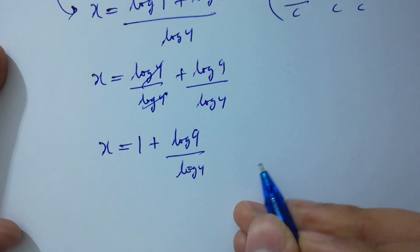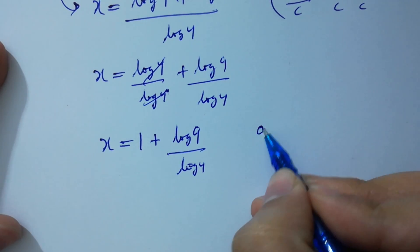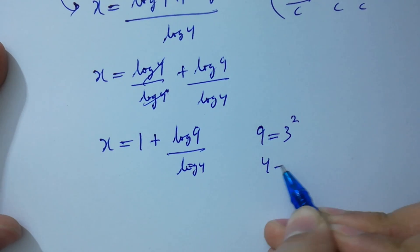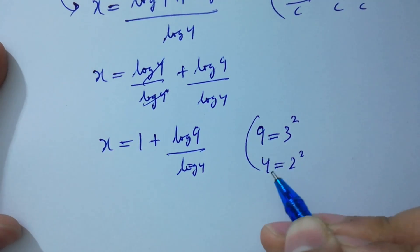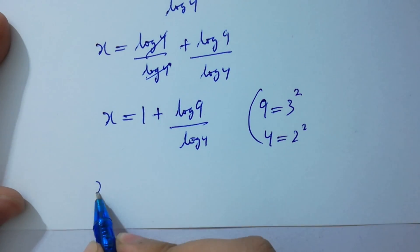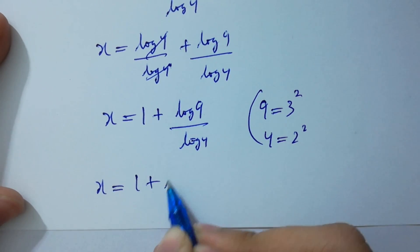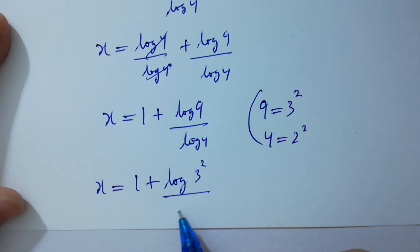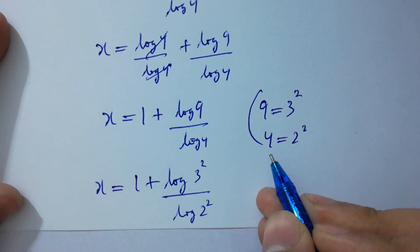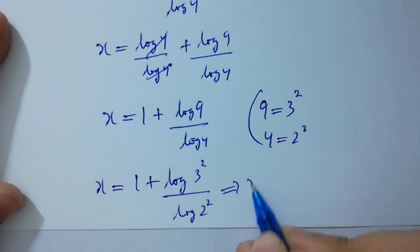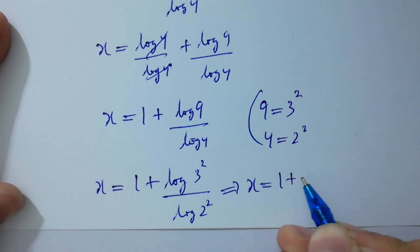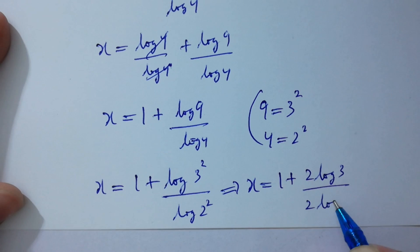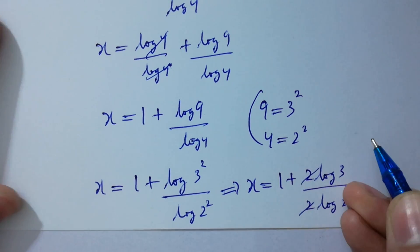As 9 equals 3 squared and 4 equals 2 squared, x equals 1 plus log 3 squared over log 2 squared, which gives x equals 1 plus 2 log 3 over 2 log 2. The 2 and 2 will be cancelled.